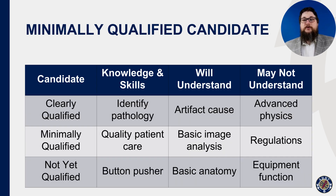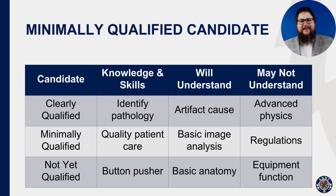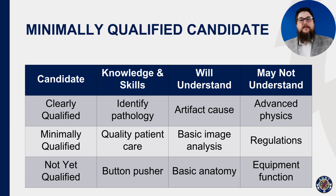We ask our subject matter experts to identify knowledge and skills that represent candidates who are not yet qualified, or those who are beyond the minimal level — what we call clearly qualified. These additional categories help refine the definition of the minimally qualified candidate and help the committee come to a consensus. For example, candidates who are not yet qualified may be able to answer simple anatomy questions, and even qualified candidates may not be able to identify specific pathologies on an image. While items related to the top or bottom of this chart may not define the minimally qualified candidate, they do improve the reliability of the exam and refine the mathematical model we use to set the cut score.